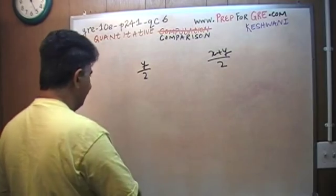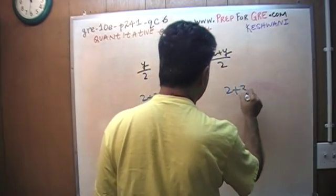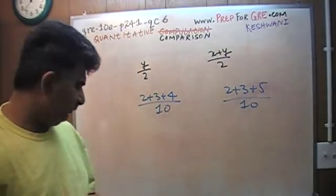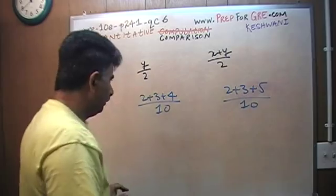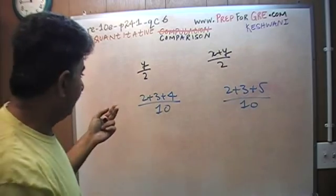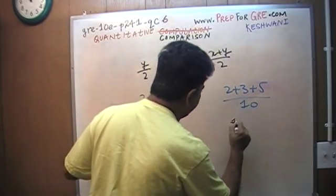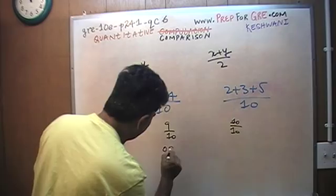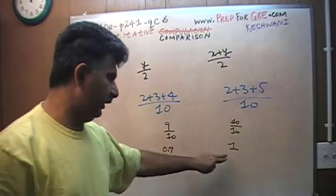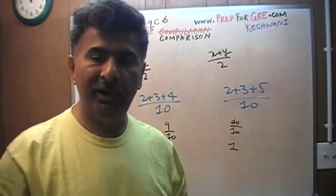For example, if I were to ask you 2 plus 3 plus 4 versus 2 plus 3 plus 5 over 10, which quantity is bigger? You could sit there and figure out that 2 plus 3 is 5 plus 4 is 9, this is 9 over 10, this is 10 over 10, therefore this is 0.9 and this is 1. You could do all of that if you wanted to, but if you did that, you will have missed the point.